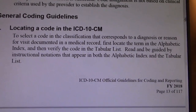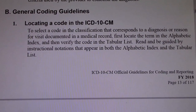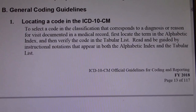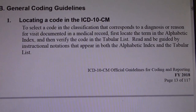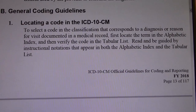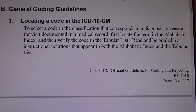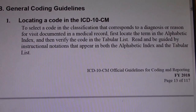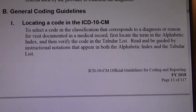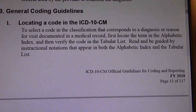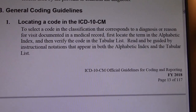First, locate the term in the alphabetic index. Remember, ICD-10-CM has two volumes: volume 1, which is your tabular list at the end of the book, and volume 2, which is at the front of the book — your alphabetic index. First locate the term in your alphabetic index at the front of your book, then verify the code in the tabular list. Read and be guided by the instructional notations that appear in both the alphabetic index and the tabular list.